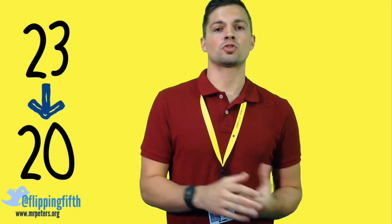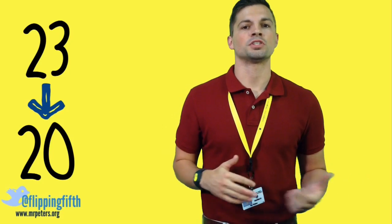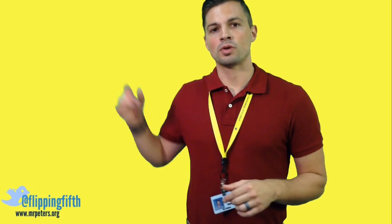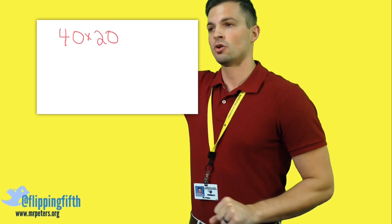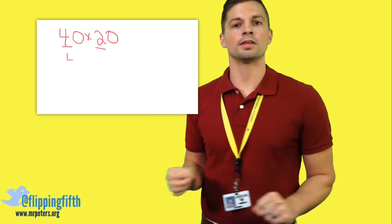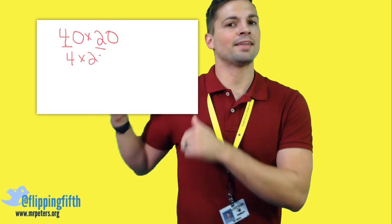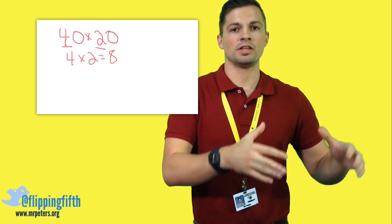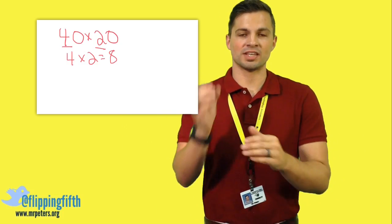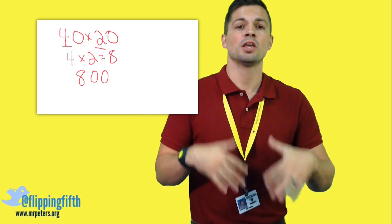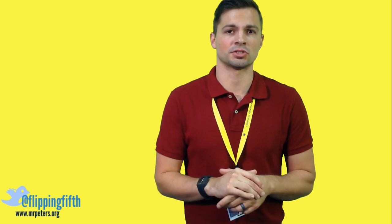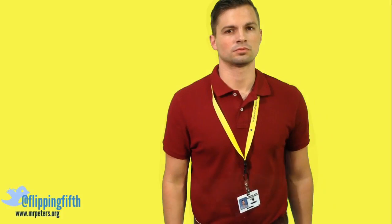Now we go back to mental math. We have 4 times 2, which is 8, but we have two zeros — one in the 40 and one in the 20. We need to add those zeros to the end, so we take that 8 and the two zeros and get 800. The answer to our problem is that we need about $800 to get around 38 shirts for our class.